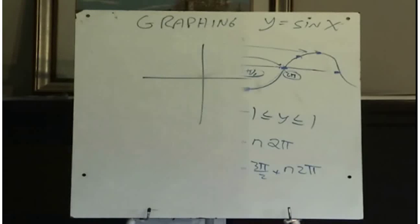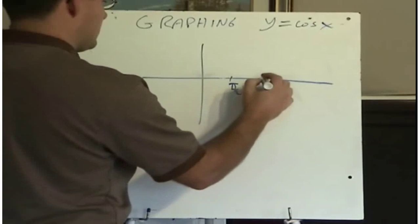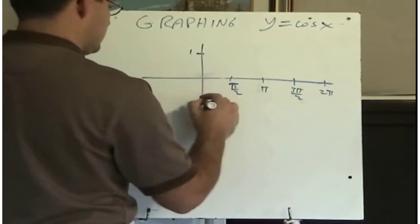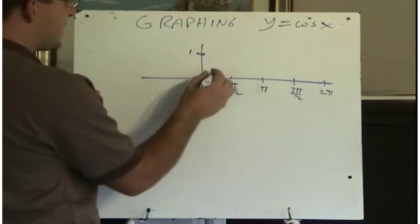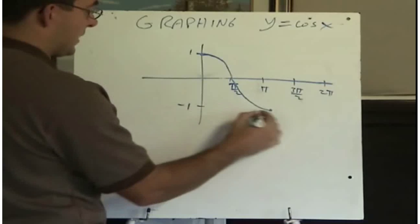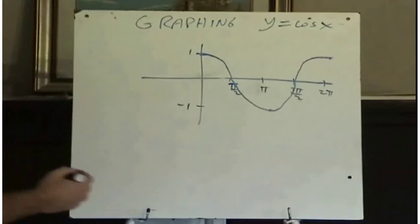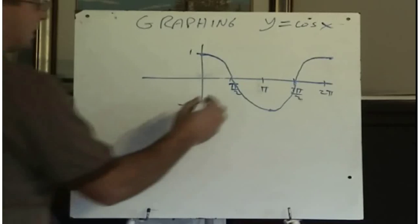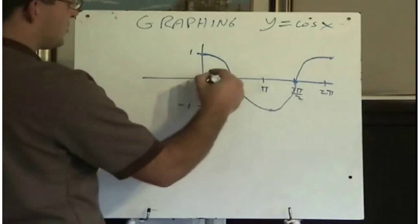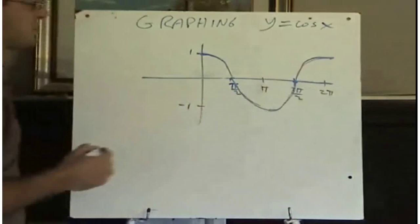Let's do cosine. Looking at the graph of y equals cosine x, it is very similar to sine x, except it starts at 1, comes down to 0 at pi over 2, down to minus 1 when x is pi, and back up to 1 when x is 2 pi. So instead of sine, which starts at 0 and comes up, cosine starts at 1, drops down to minus 1, and comes back up to 1.